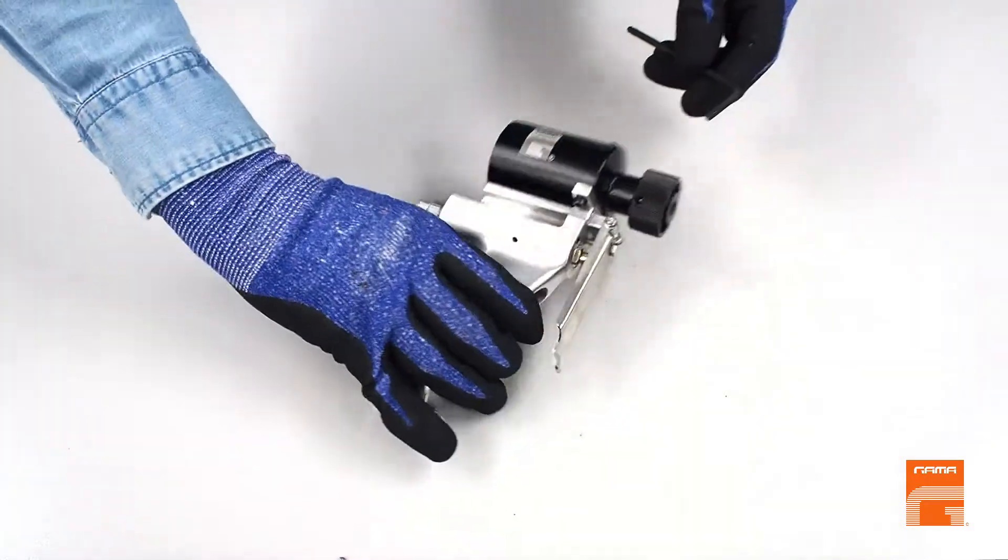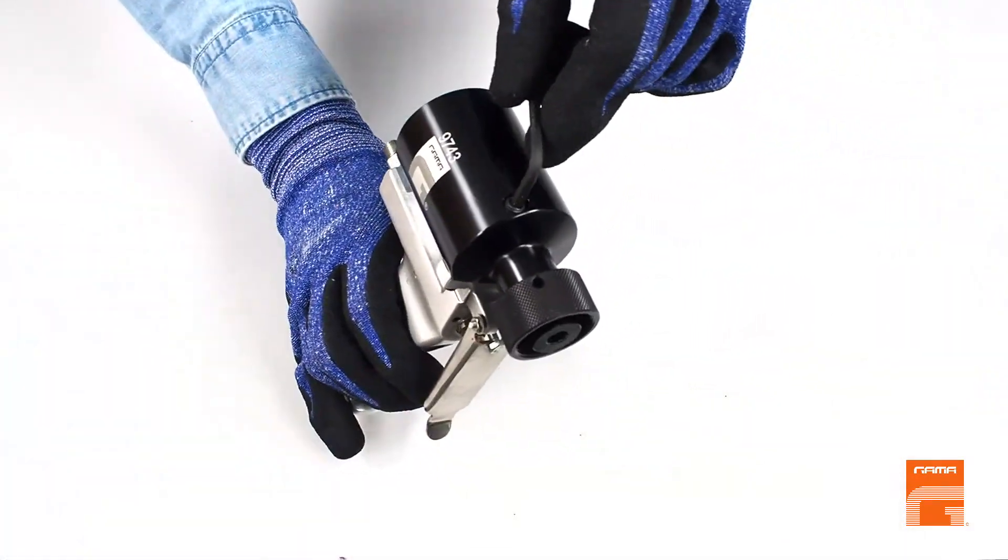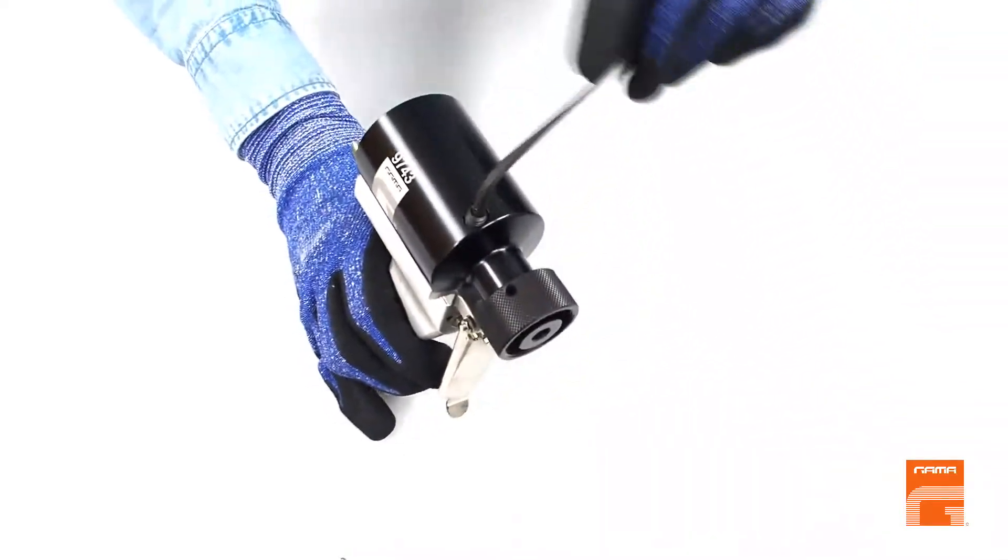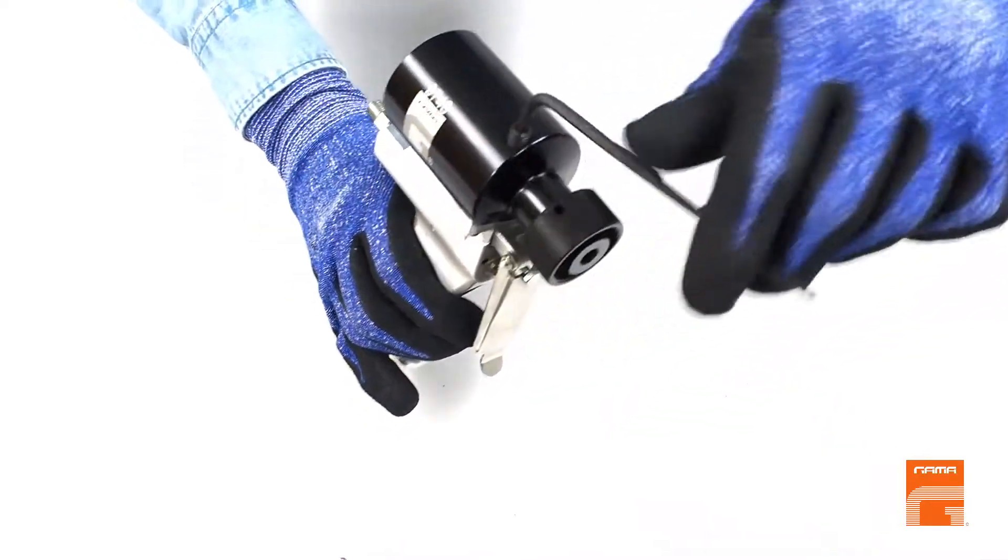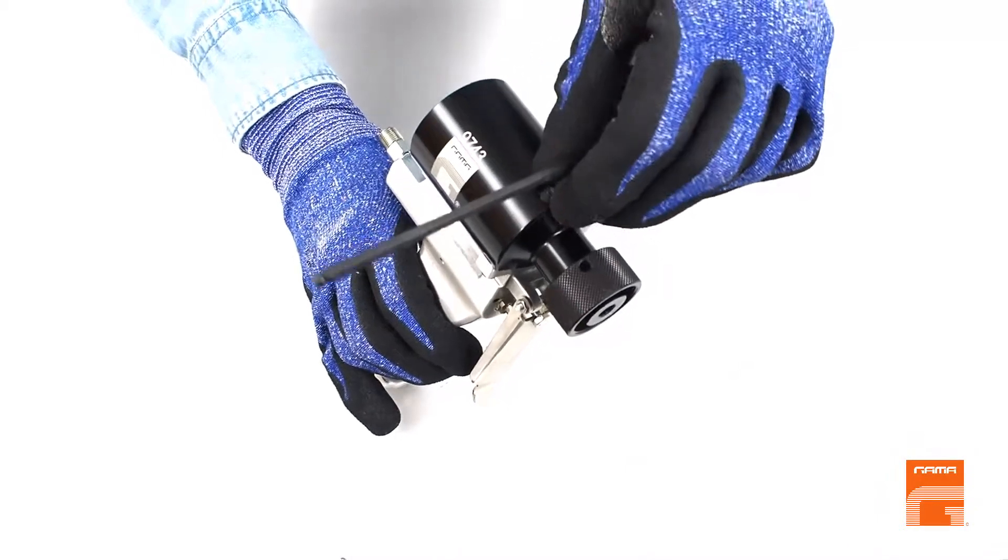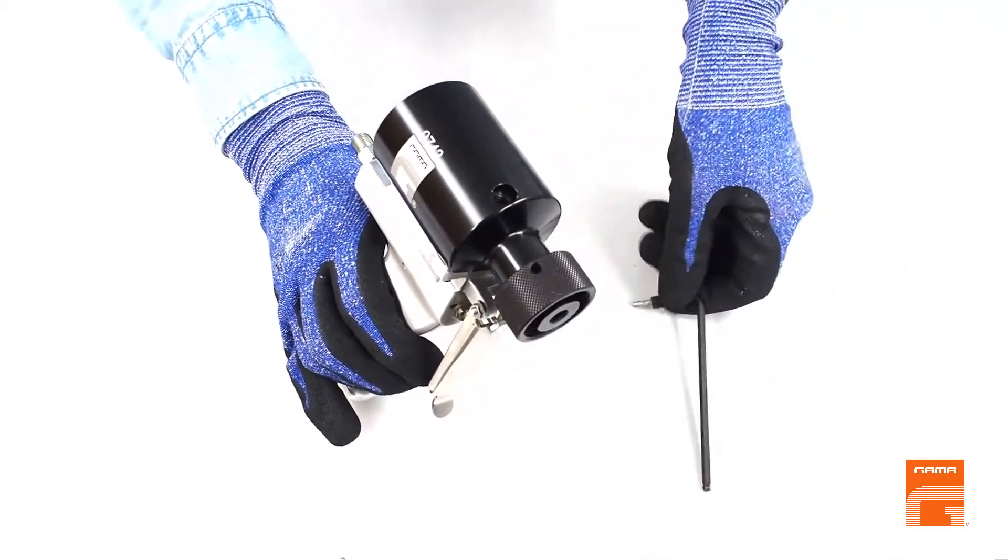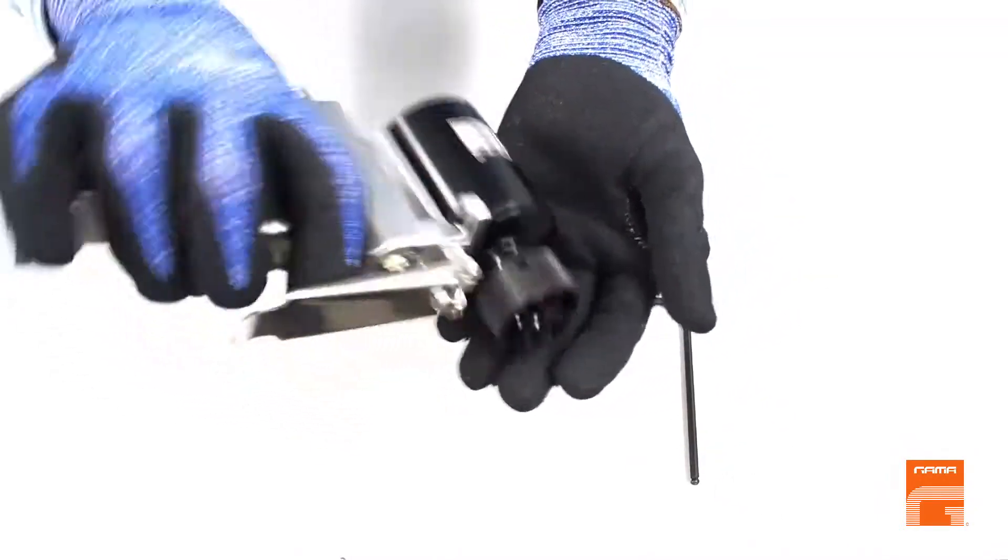Step 5: You will have to unscrew the hexagonal plug located on the top of the pneumatic cylinder with an allen key. Extract it and extract the spring and the ball.